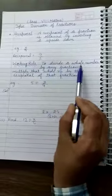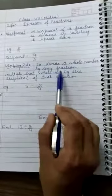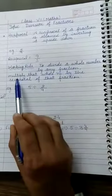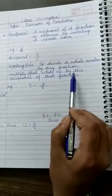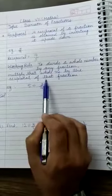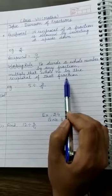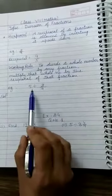To divide a whole number by any fraction, we have to multiply that whole number by the reciprocal of that fraction. Just understand it with the help of an example.